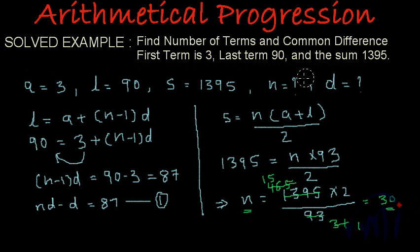Let me correct it, let me note it down over here. n we have got as 30, and if I put this value of n in the first equation, this is the first equation, we will be able to find the value of d. So this will become 30d minus d is equal to 87.